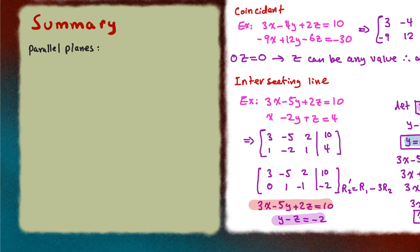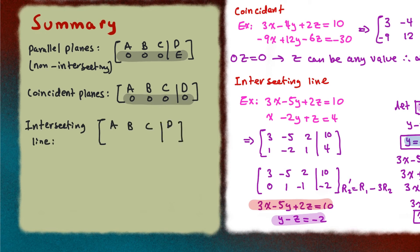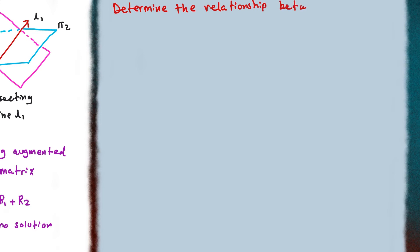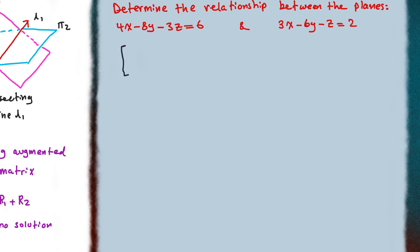The concepts of this lesson are summarized here, so please feel free to pause the video and write any information down. Now we are going to look at an example where we determine the relationship between two planes given in Cartesian form. We will use augmented matrix, using the coefficients and the value of the constant.